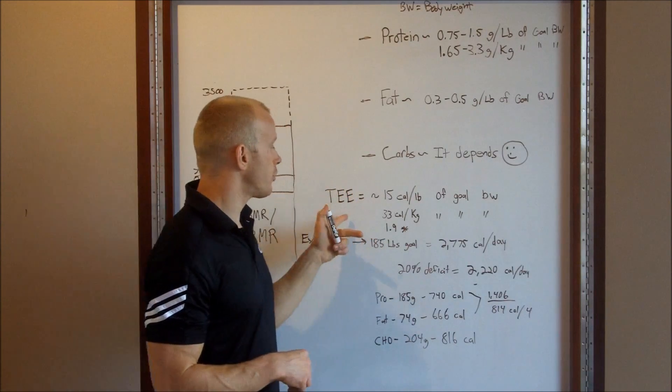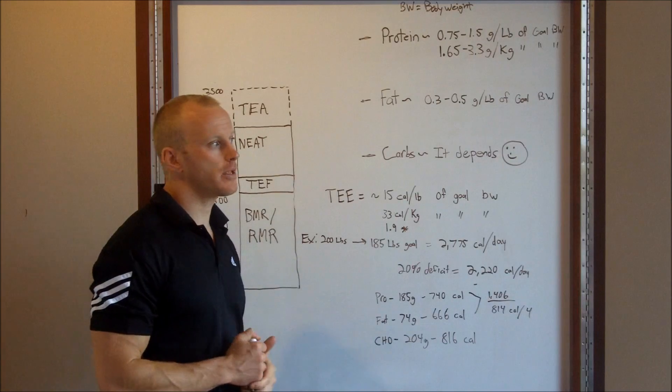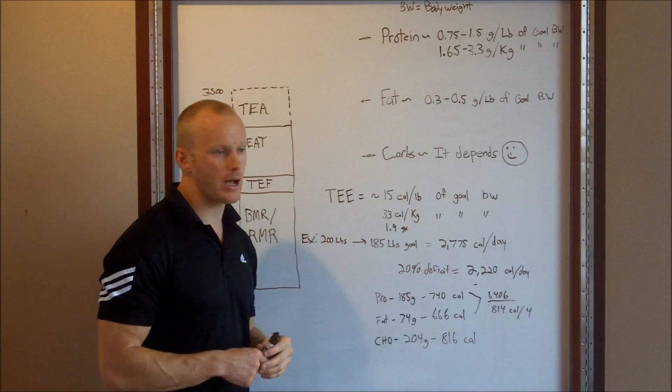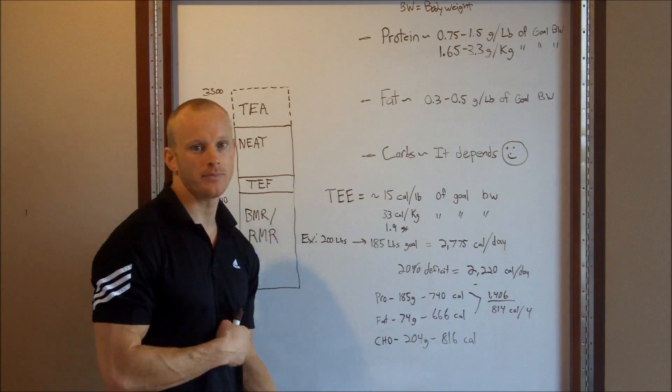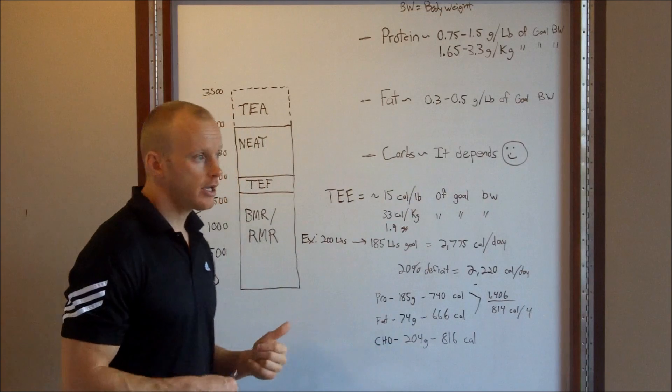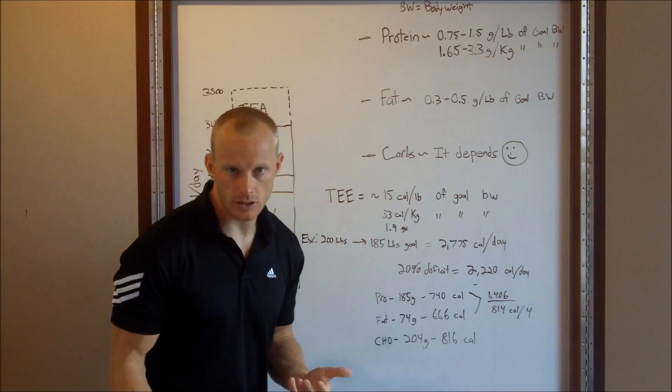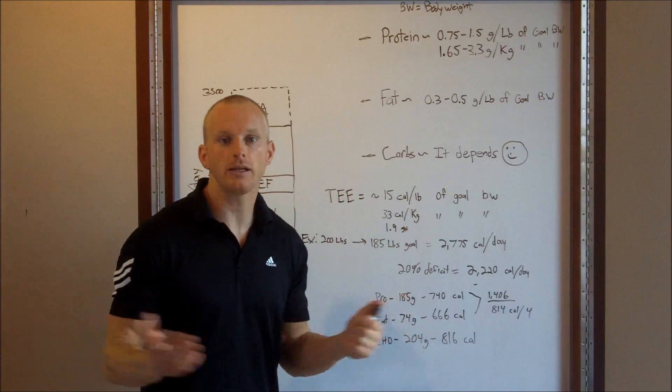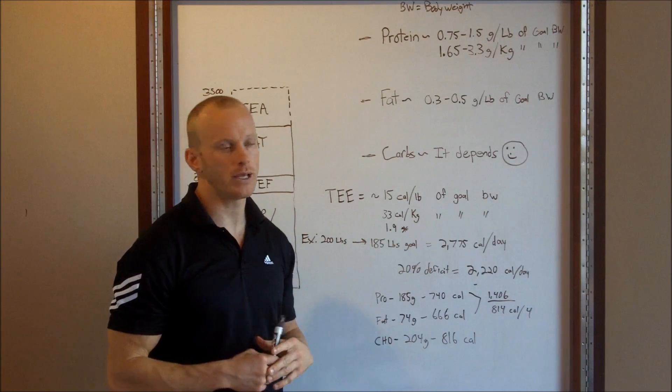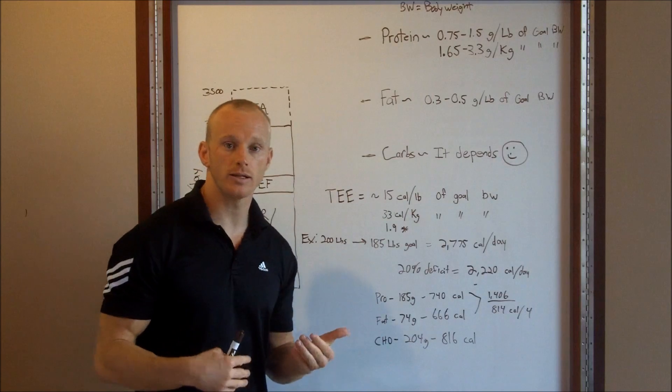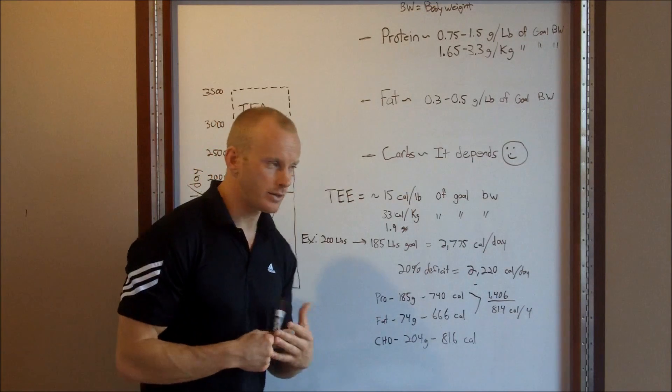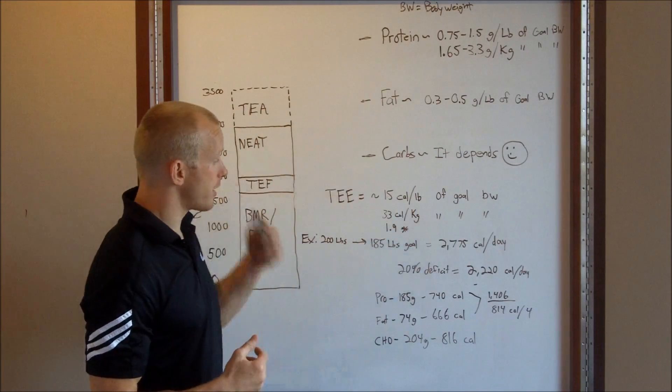So how do we calculate this number is the question. So, first and foremost, your total energy expenditure. For somebody who's active, I'm talking about somebody who is working out at least five hours a week with relative intensity, it's about 15 calories per pound, could be 14 for some, could be 16 for some. You could take that, or 33 calories per kilogram of goal body weight. I say based on your goal body weight, and do it within reason, if you're trying to gain weight. Without further ado, let's just go ahead and do an example here.